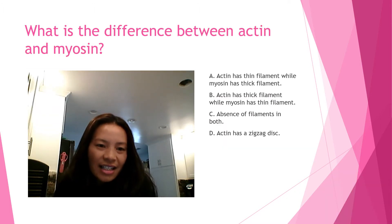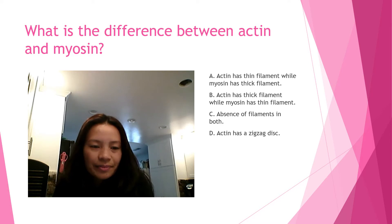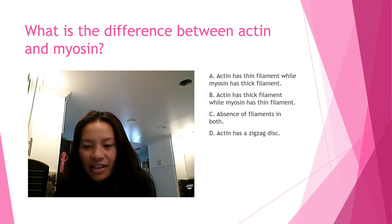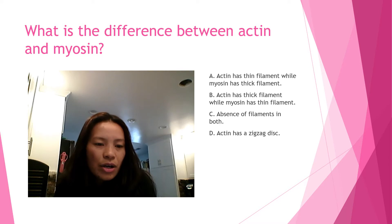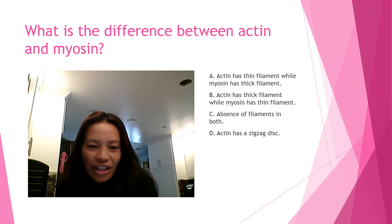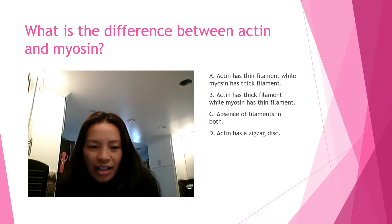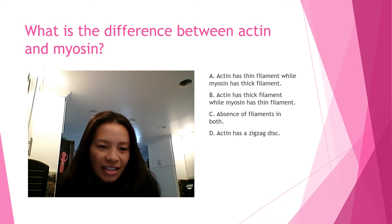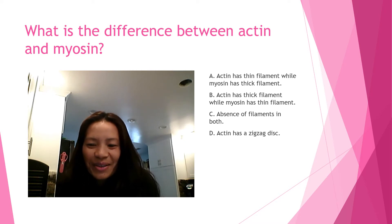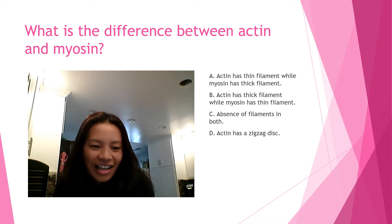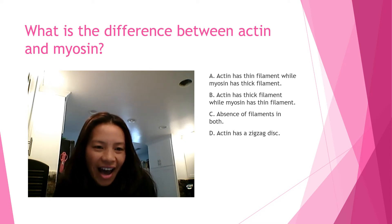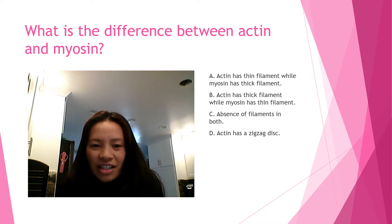Question two: what is the difference between actin and myosin? Is it A) actin has thin filament while myosin has thick filament, B) actin has thick filament while myosin has thin filament, C) absence of filament on both, or D) actin has a zigzag disc? The answer is letter A — actin has thin filament while myosin has thick filament.